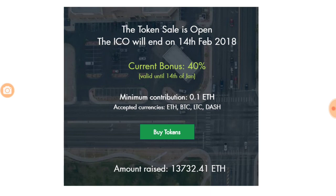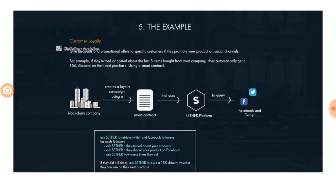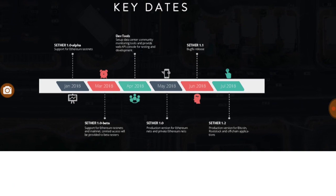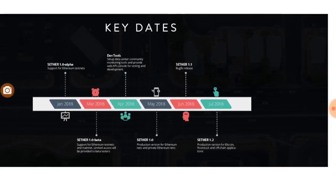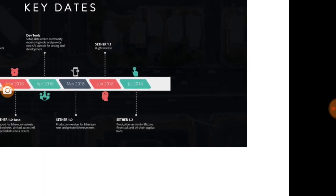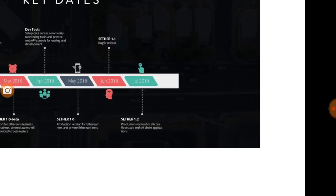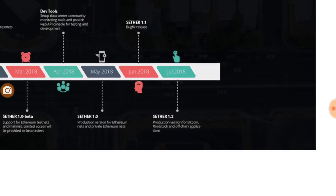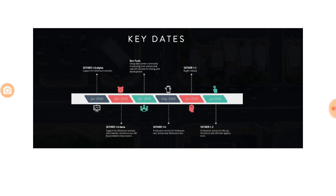The minimum contribution is 0.1 Ether, and accepted currencies are ETH, BTC, LTC, and DASH. As for the key roadmap dates: Sether 1 alpha version was available in January 2018, beta version will be available in March, developer tools in April, and Sether 1.0 will be ready as a mobile app by May 2018, with two subsequent versions set to release in June and July.